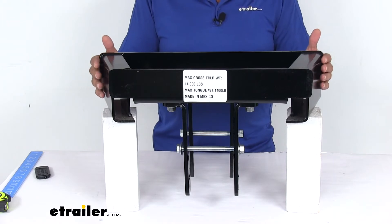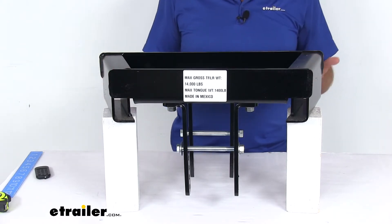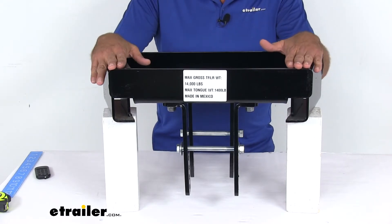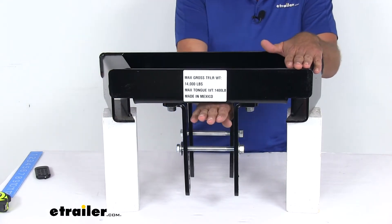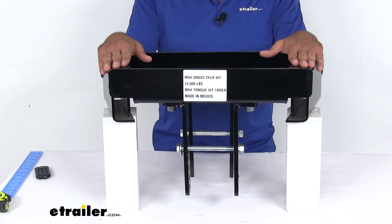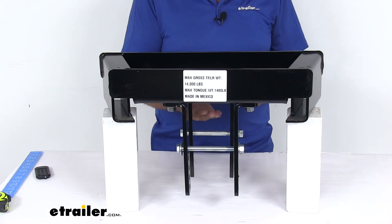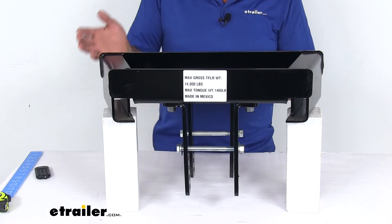It's rated for 1,400 pounds of tongue weight and 14,000 pounds of gross trailer weight if we mounted on top of our trailer like we've got it set now, with the tongue going in right here. Or 1,200 pounds of tongue weight and 12,000 pounds of gross trailer weight if we mounted on the bottom, so this whole assembly would be flipped over upside down.